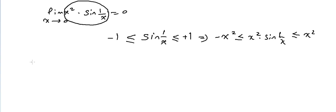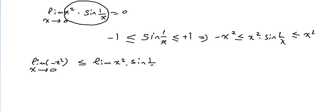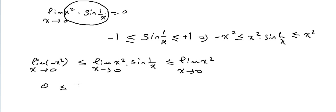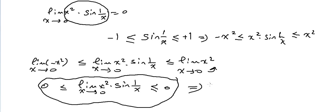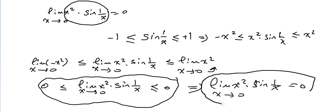Taking the limit of all sides as X approaches 0: limit of minus X squared less than or equal to limit of X squared times sine(1/X) less than or equal to limit of X squared. Substituting 0 on the left gives 0, and substituting 0 on the right gives 0. Since this function's limit is between 0 and 0, by the Sandwich Theorem the limit of X squared times sine(1/X) as X approaches 0 equals 0.